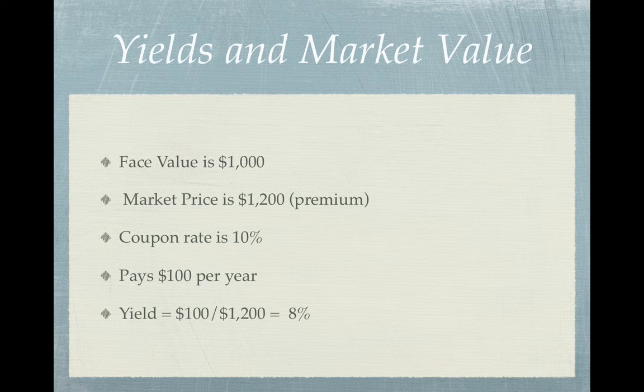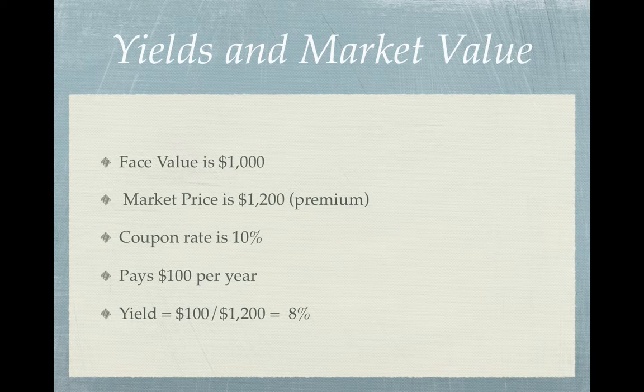Why would people pay more or less for the same bond? It all comes down to supply and demand. If demand is low, there aren't as many investors looking to purchase bonds, so the price of bonds decreases. When the price decreases, the yield increases — that inverse correlation takes place between bond prices and yields. When the stock market is in turmoil, investors look to the bond market, and vice versa. So when the stock market is doing great, investors are going to move their money from the bond market to the stock market, which again affects those bond prices and yields.